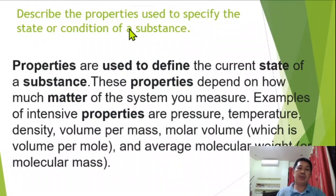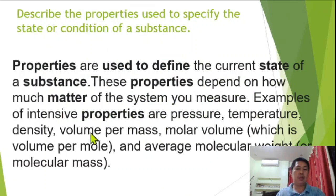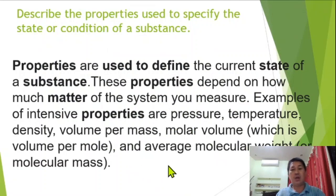Properties are used to specify the state or condition of a substance and define its current state. These properties depend on how much matter is in the system. Examples of intensive properties are pressure, temperature, density, volume per mass, molar volume (volume per mole), and average molecular weight or molecular mass.